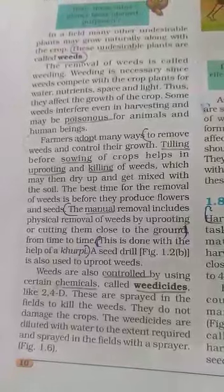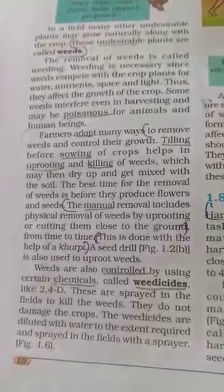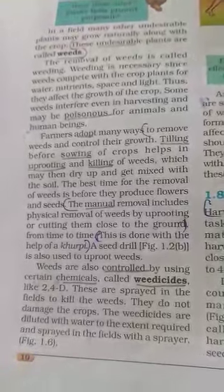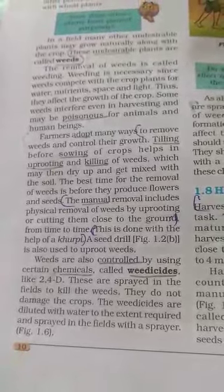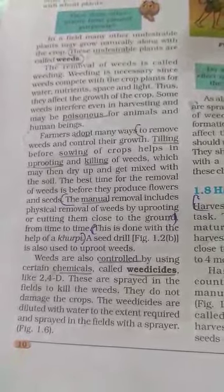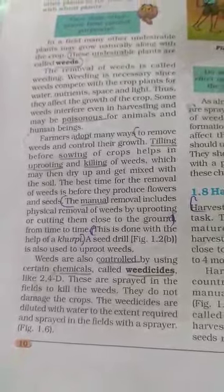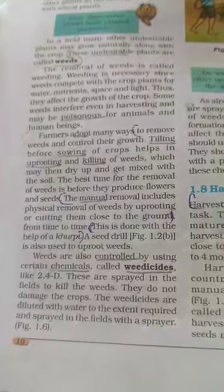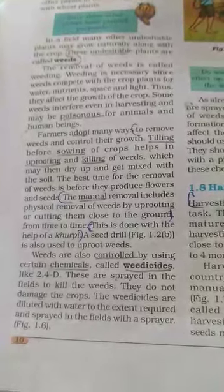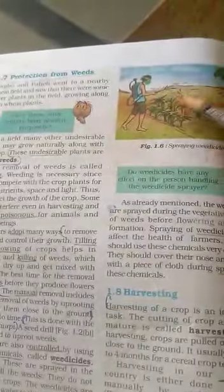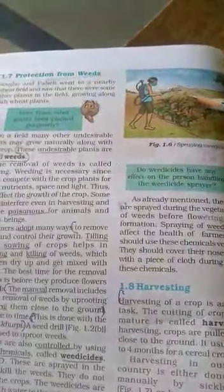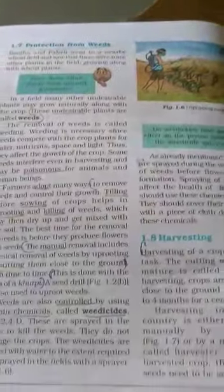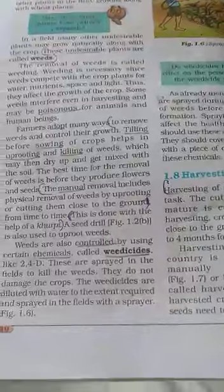It is also used to uproot weeds. Controlling weeds using chemicals — certain chemical weedicides like 2,4-D are sprayed. They are spraying the weedicide so that the chemical controls weeds and allows the crop to grow properly.